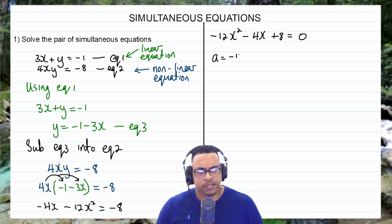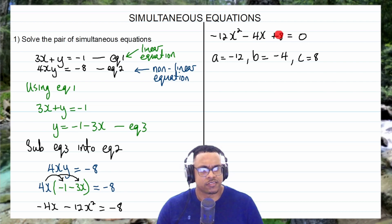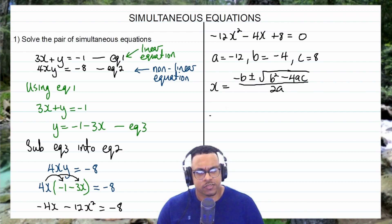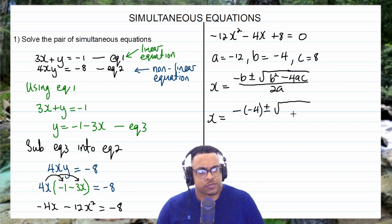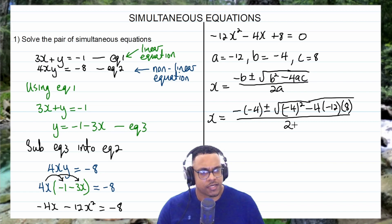Identifying the coefficients: a equals negative 12, b equals negative 4, and c equals positive 8. The coefficient of x squared is a, the coefficient of x is b, and the constant is c. The quadratic formula reads: x equals negative b plus or minus the square root of (b squared minus 4ac), all over 2a. Substituting: x equals negative(negative 4) plus or minus the square root of (negative 4 squared minus 4 times negative 12 times 8), all over 2 times negative 12.